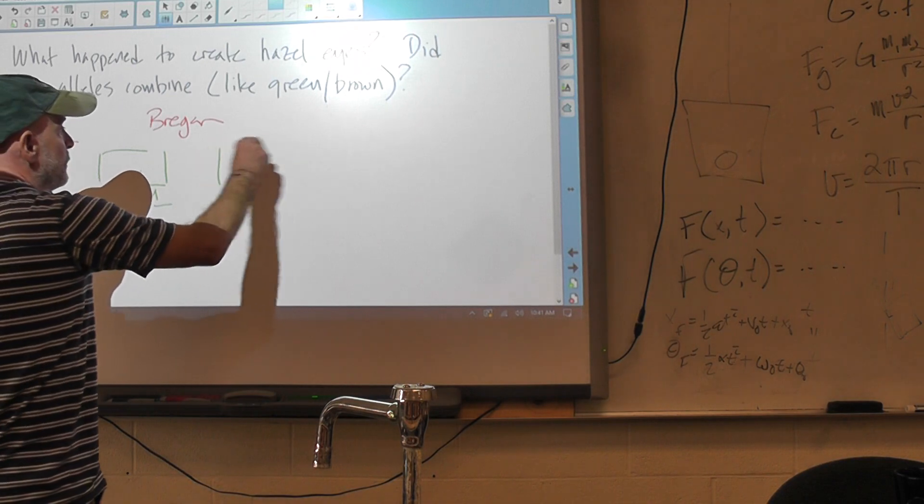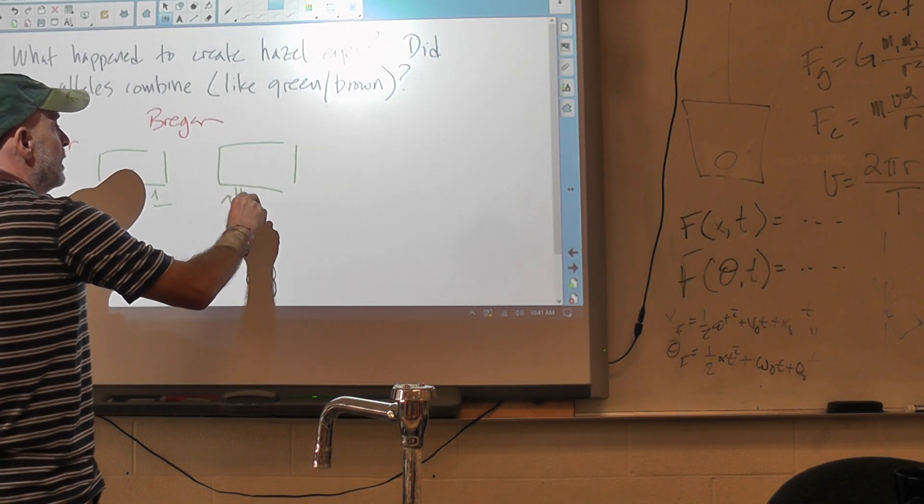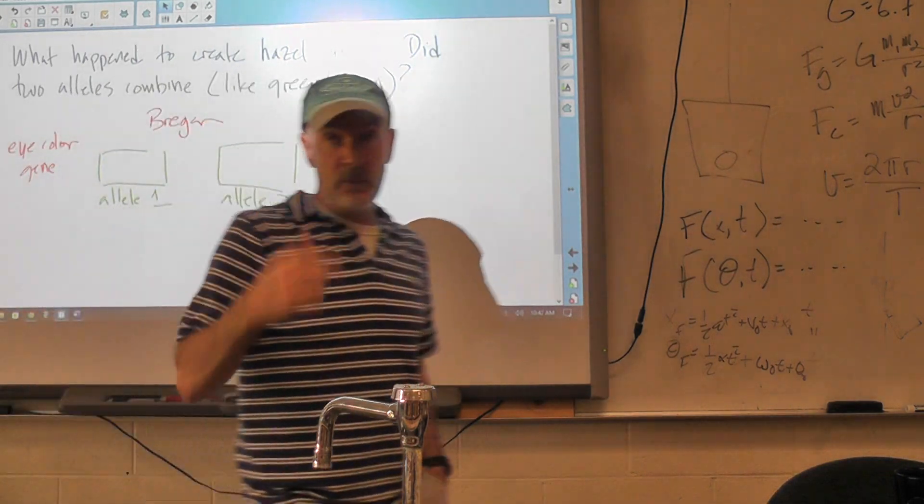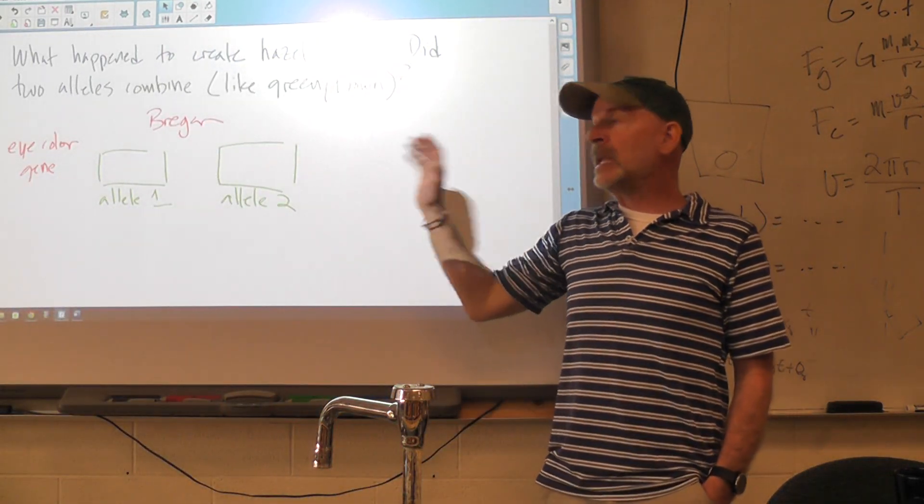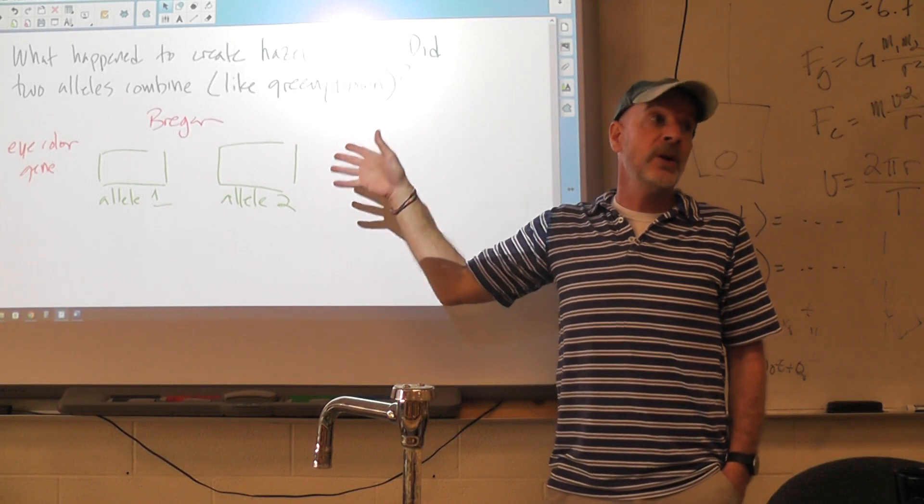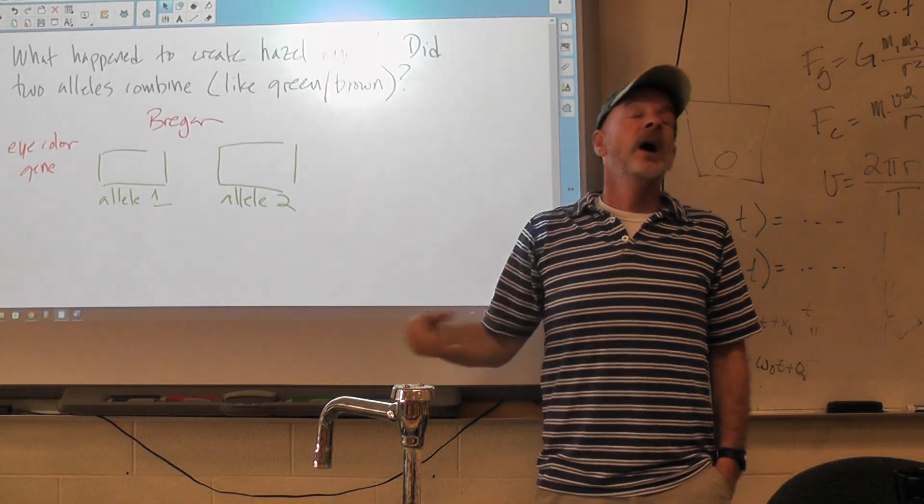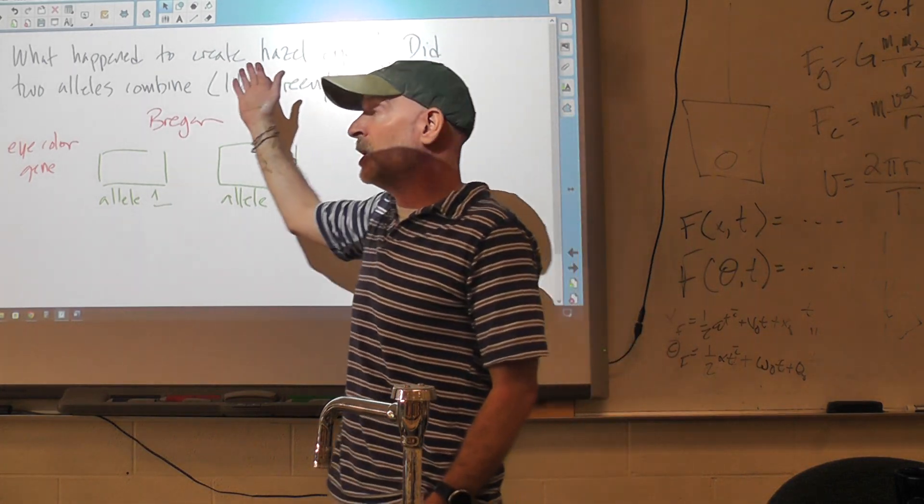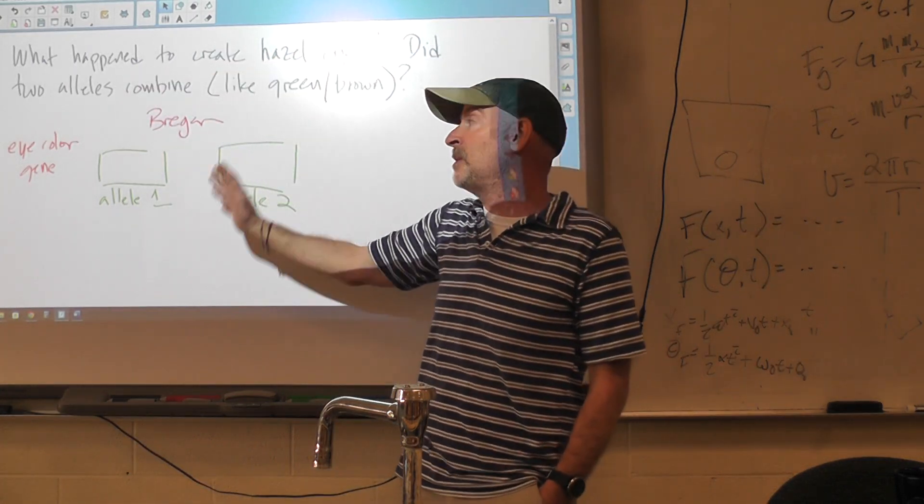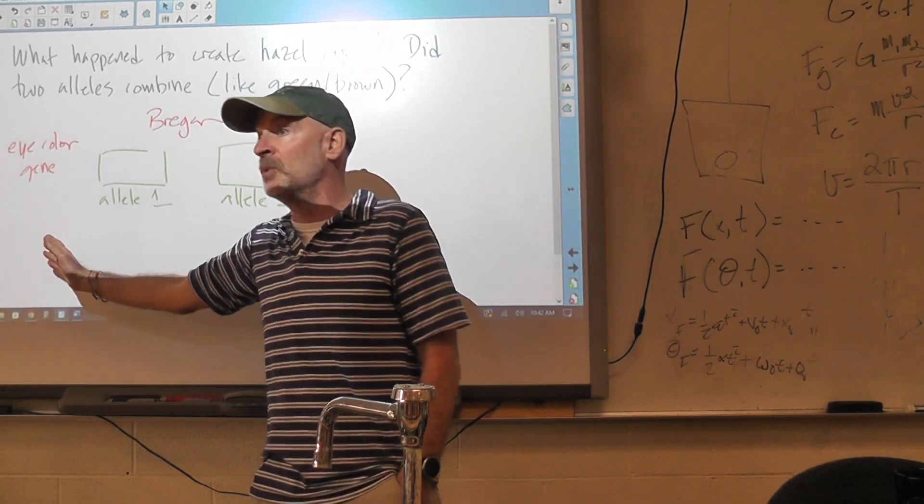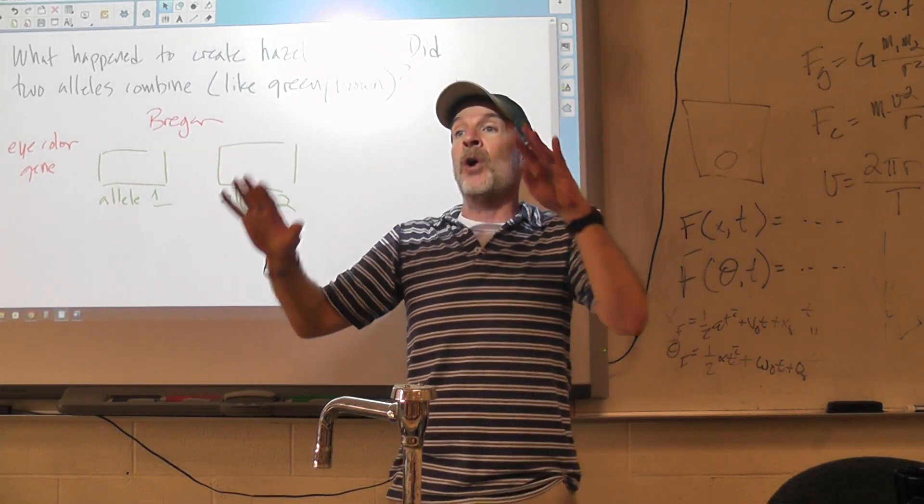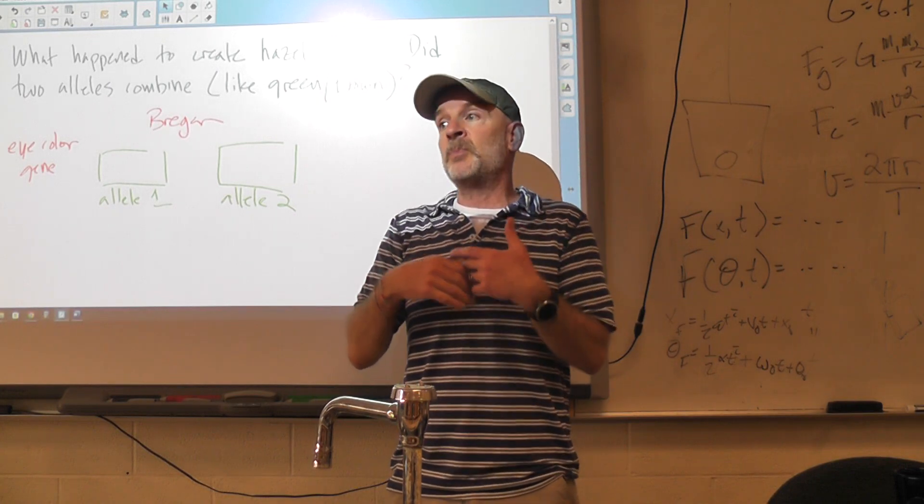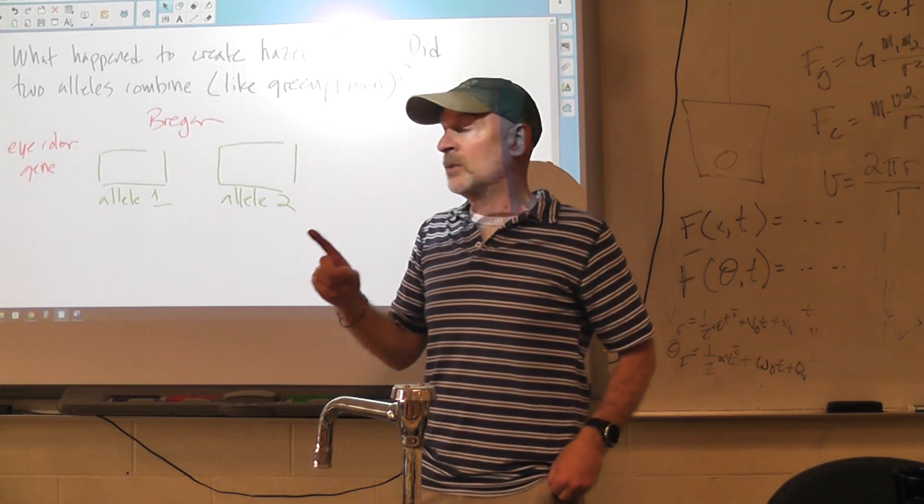Now, one of the things that I mentioned but we didn't really focus on was the idea that many traits—eye color almost certainly is one of them—are governed by more than one gene. So part of the answer to your question is there may be other genes involved, maybe like an eye color one, eye color two, and eye color three gene that all contribute. But for simplicity's sake, let's just assume or pretend that it's just one gene.